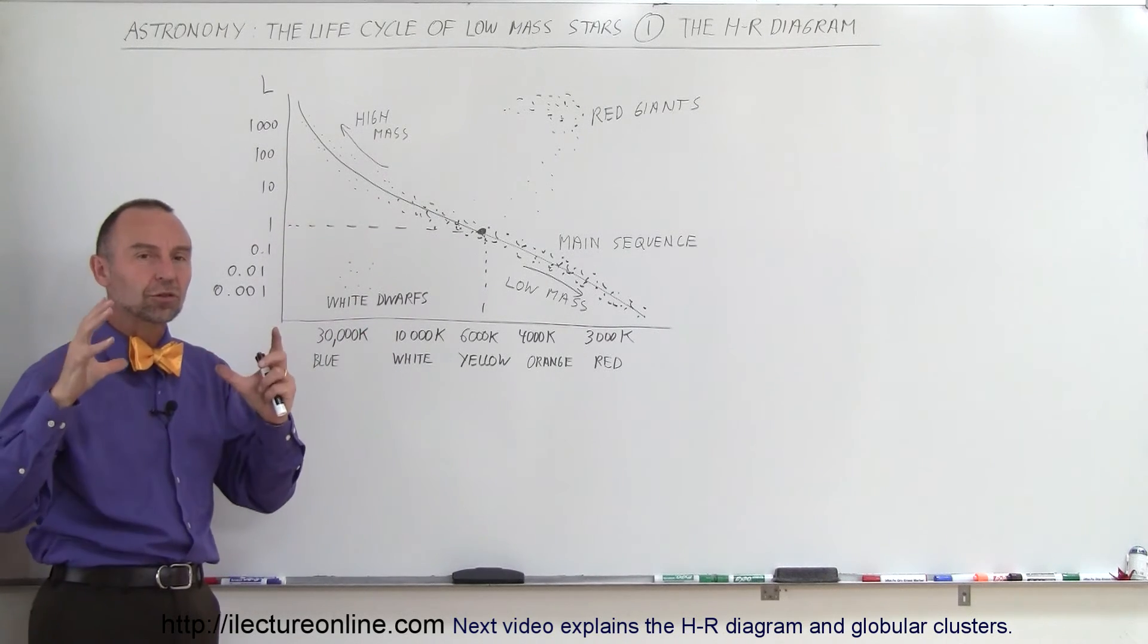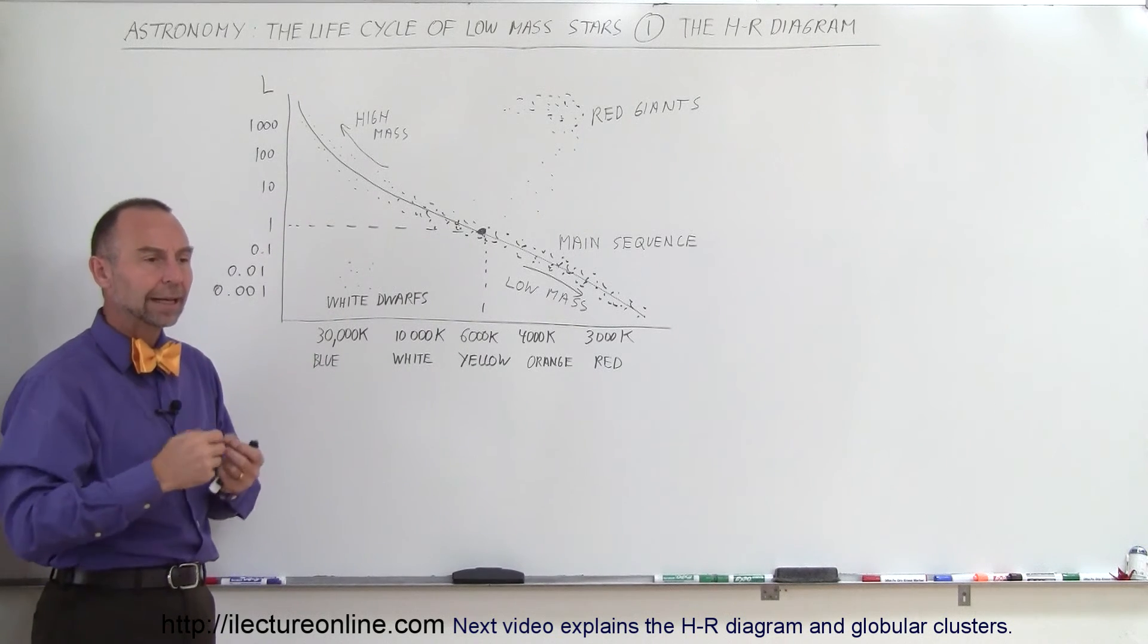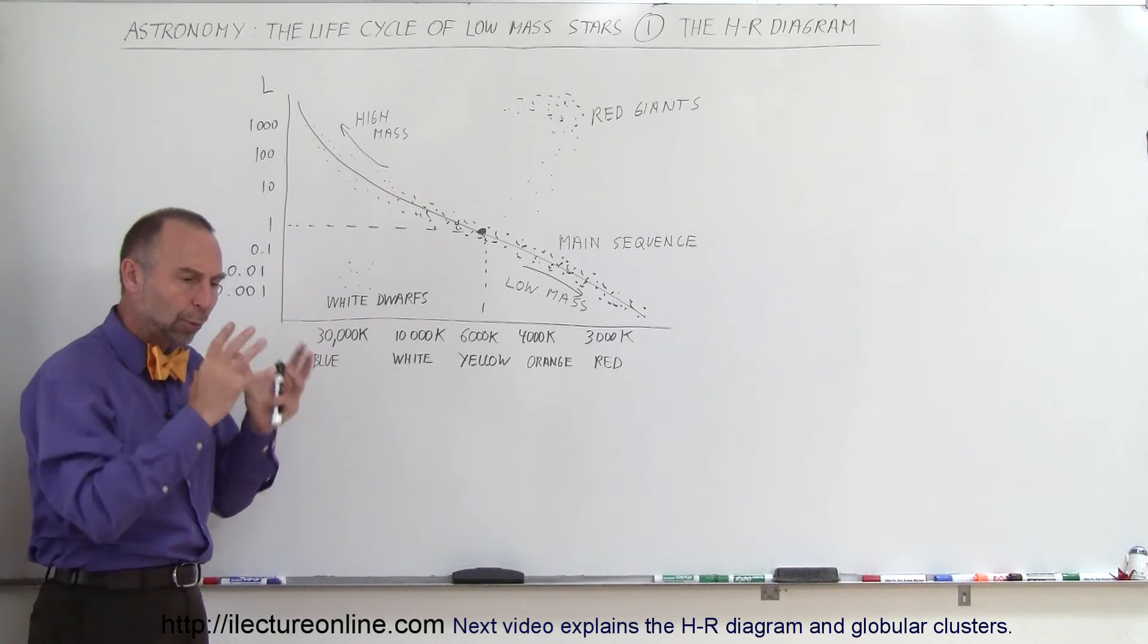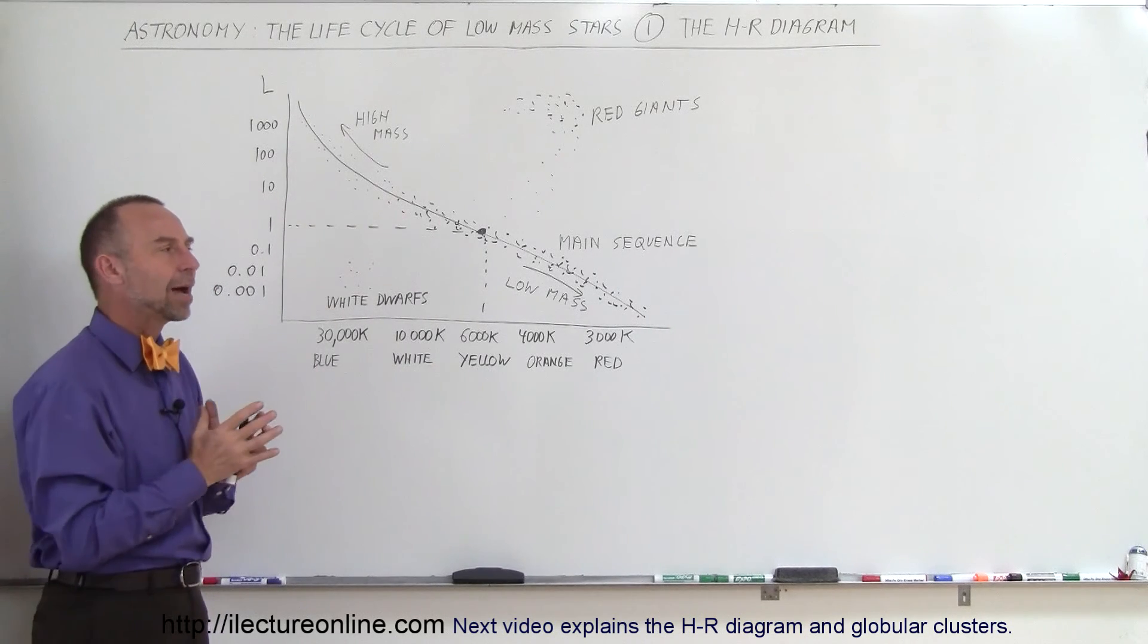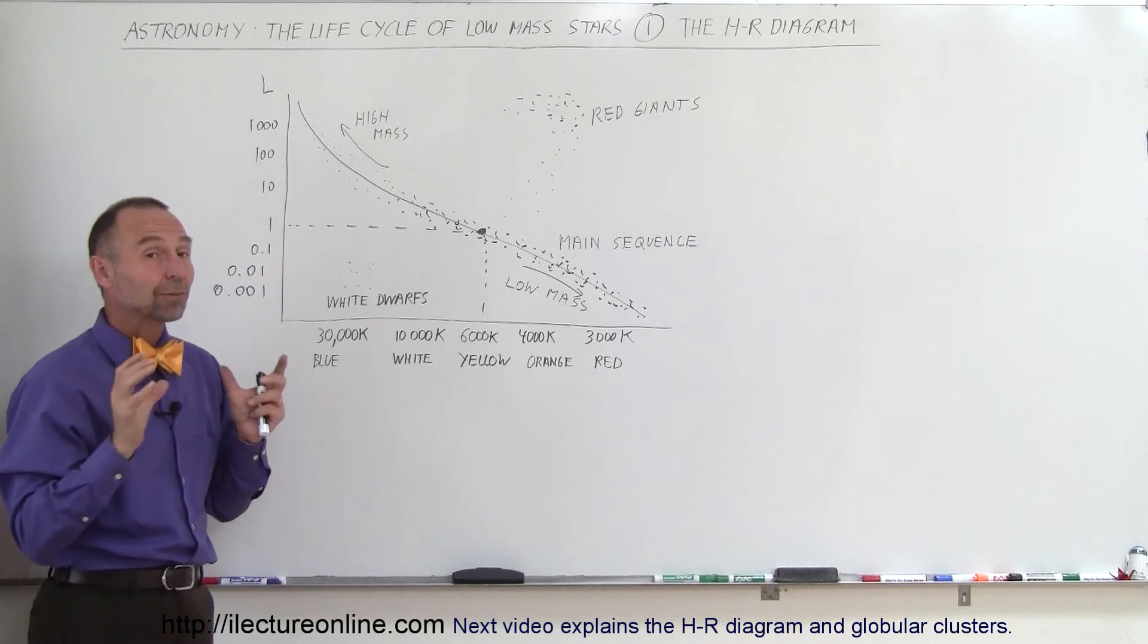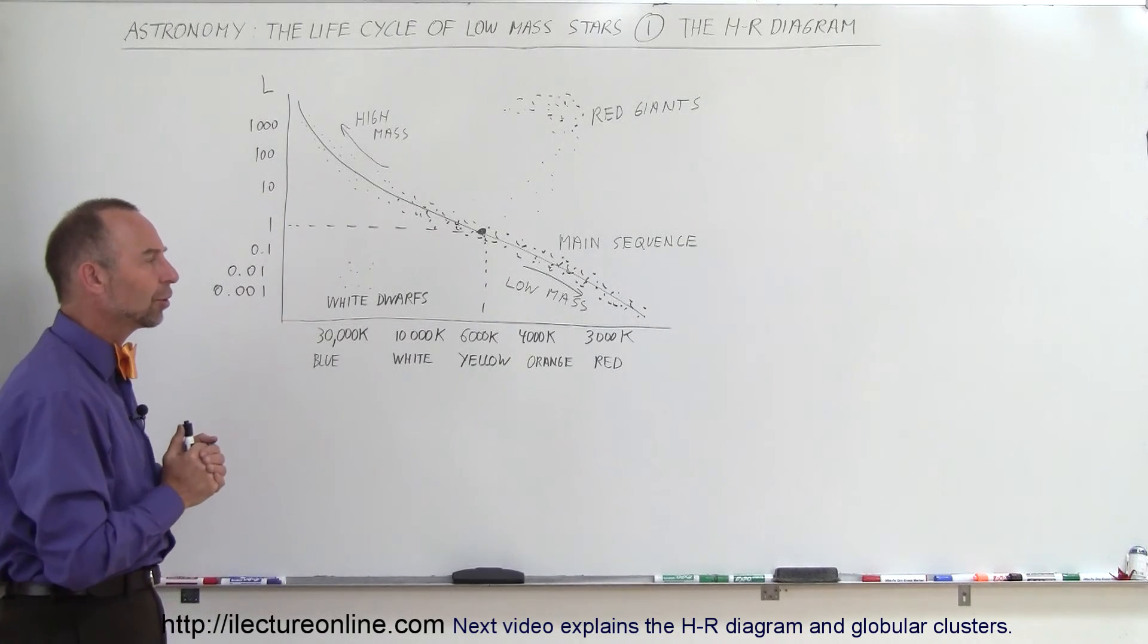It's when we put clusters of stars on the HR diagram. For example, we'd look at a globular cluster, and knowing that those stars all started or were formed at about the same time, by placing those stars on the HR diagram, we found something very interesting. In our next video, we're going to explore that to get a better understanding of what that is all about.